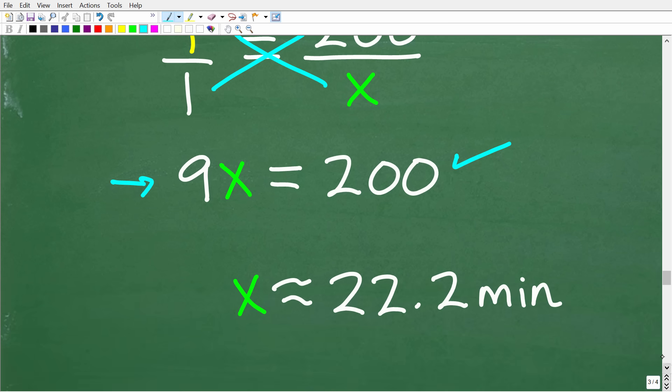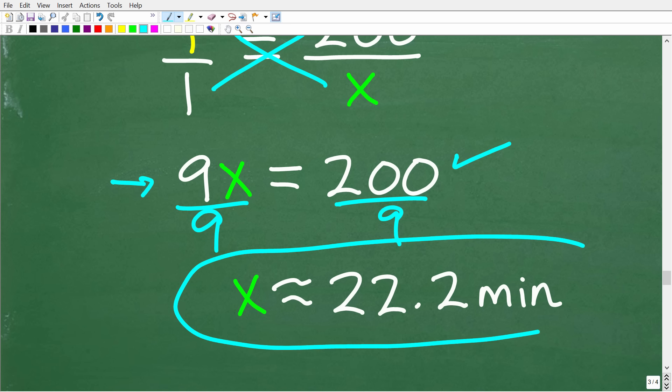So, one last step here to solve for x. And that is to divide both sides of the equation by 9. So, 200 divided by 9 is approximately 22.2 minutes.